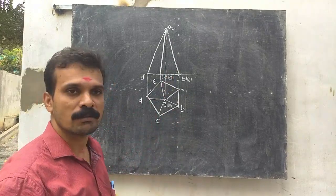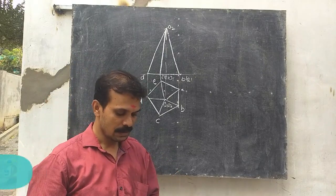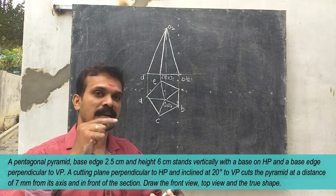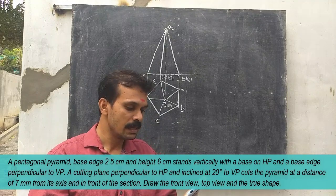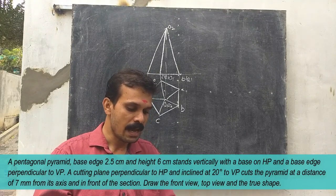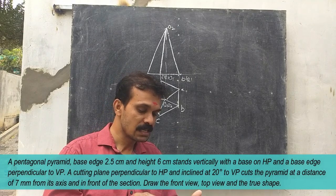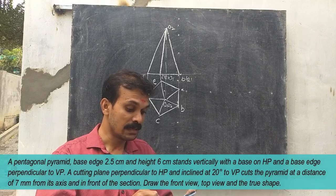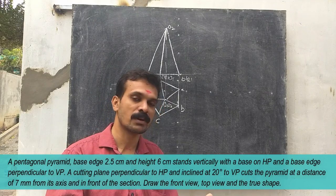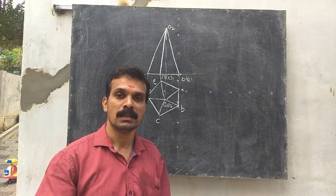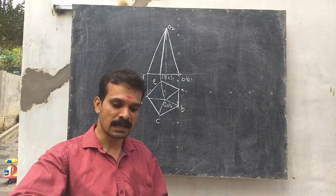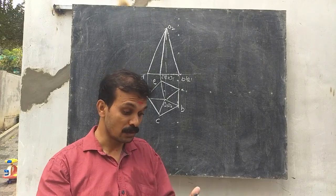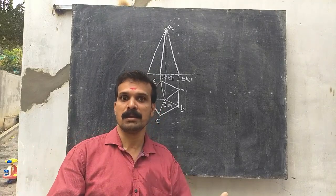Now this pyramid is cut by a section plane perpendicular to HP and inclined 20 degrees with VP, cutting the pyramid at a distance of 7 mm from its axis and in front of the section. First we have to obtain the position of the cutting edge. It is given that the cutting edge passes through the pyramid at a distance of 7 mm in front of the axis, and it is perpendicular to HP.